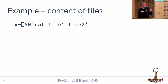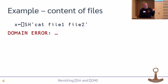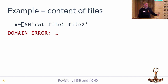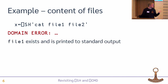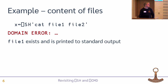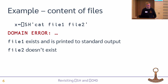Here's another example. The cat command takes a bunch of files and prints the output. In this example, we get a domain error again because the return code is not zero, and there's not really any way to know what went wrong — you just get the domain error. File 1 existed and was printed to standard output, but that standard output is lost because we just get a domain error. File 2 didn't exist, which is why we got the non-zero return code. Cat would also have printed an error message, but that's also nowhere to be found.